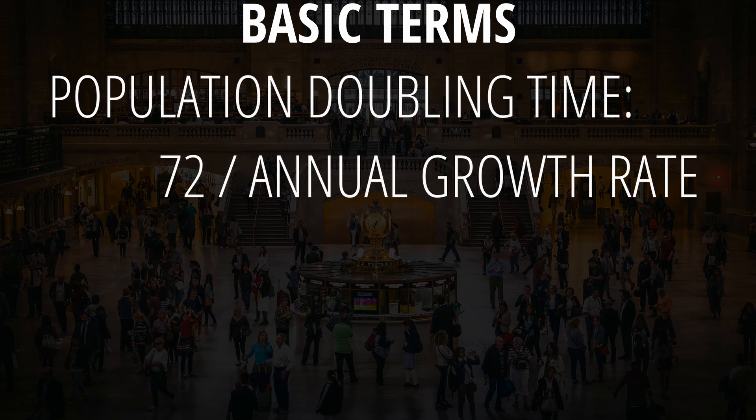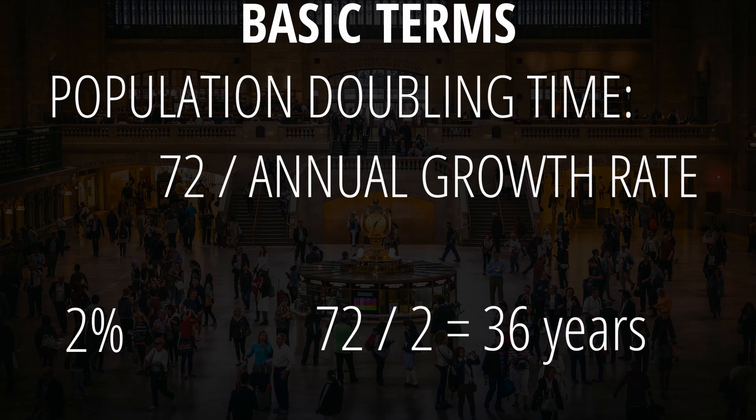In reference to population growth, geographers use population doubling time to describe how fast the population is growing — essentially the number of years it takes for the population to double. To calculate this, you divide 72 by the annual growth rate. For example, if a country has a population growth of 2%, you divide 72 by 2, and it would take that country 36 years to double its population.